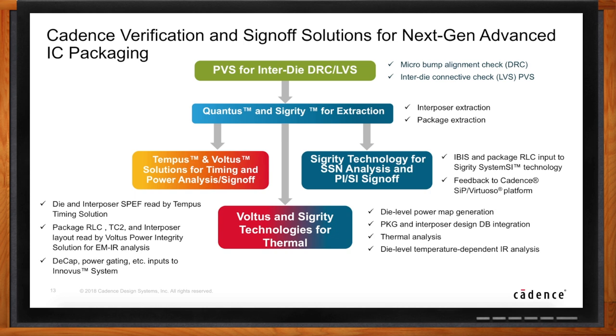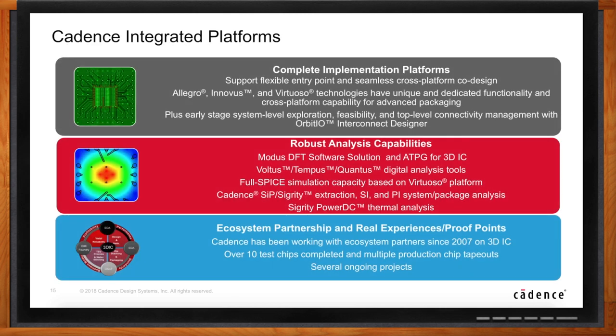So, John, I think I'm ready to wrap this thing up. Can you give me your main points? The main points are that Cadence has several different implementation platforms that have been extended and are available today to do the implementation of all of these advanced packages. Technologies like CoWoS, WoW, and fan-out wafer-level packaging are now possible in the Cadence tools. We also think beyond just the implementation piece — we've extended all of our analysis capabilities and sign-off tools. So it's a complete flow from planning all the way through sign-off, and all of the tools have been enhanced to support these advanced packaging technologies.